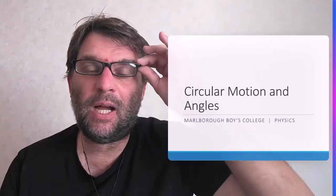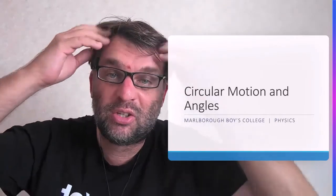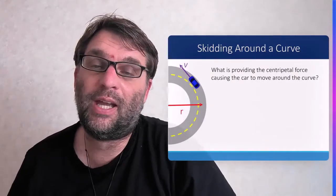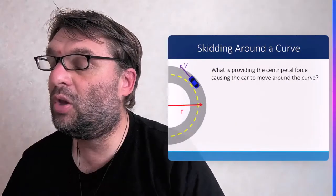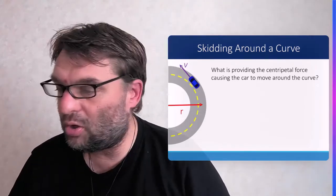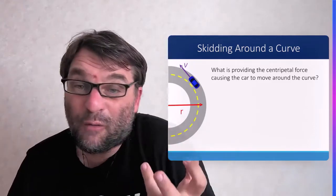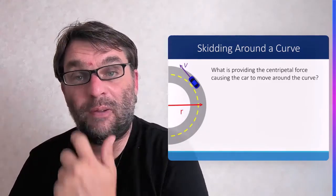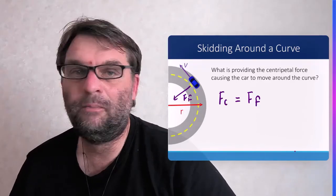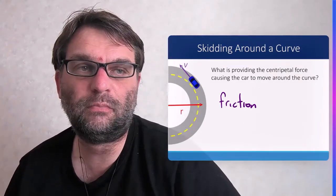Welcome to the next lesson in circular motion for Level 3 physics — specifically circular motion in the horizontal direction. In the previous video we looked at circular motion in the vertical direction. On Earth, objects move along a horizontal circular path, as seen with a car moving around a curve. The centripetal force must be provided by another force — when skidding around a curve, that force is friction.